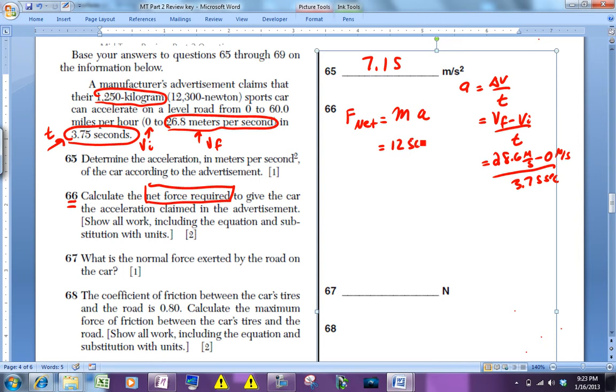And the acceleration you use is the one you just calculated, 7.15 meters per second squared. Which, when you put in your calculator, should give you 8,938 Newtons.